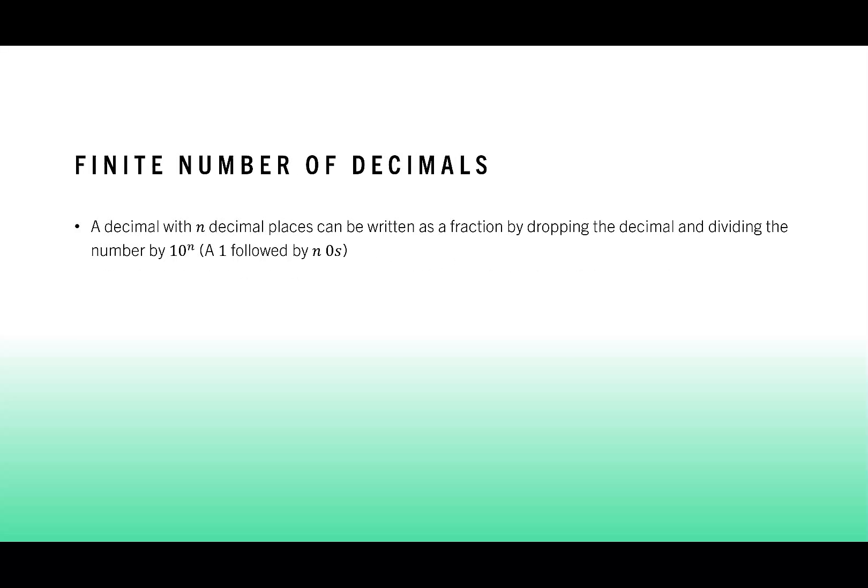Let's start with a finite number of decimals. A decimal that has n decimal places can be written as a fraction by dropping the decimal and dividing the number by 10 to the power n. That's really just a 1 followed by n zeros. I know that sounds hard, so let's break that down.